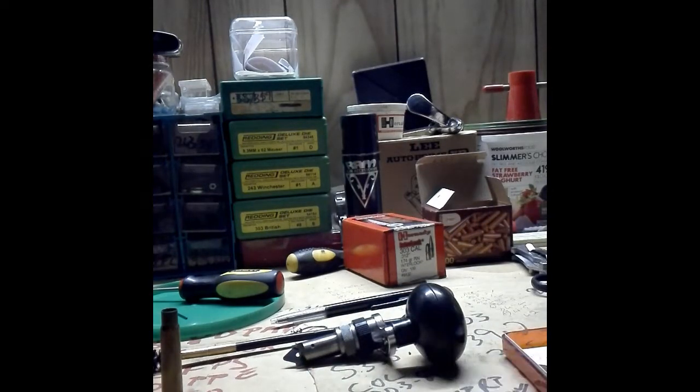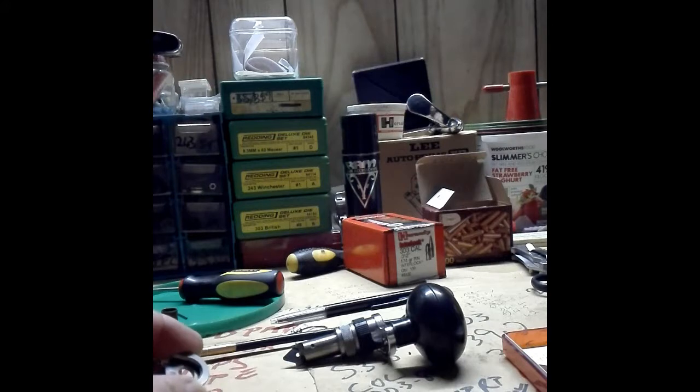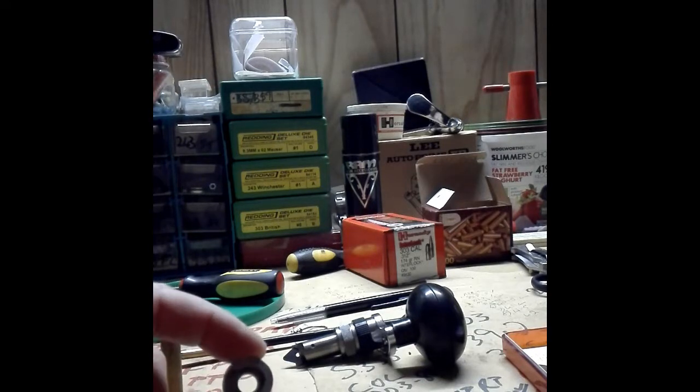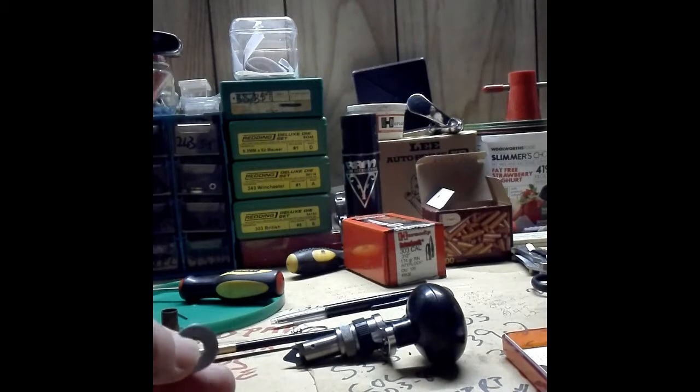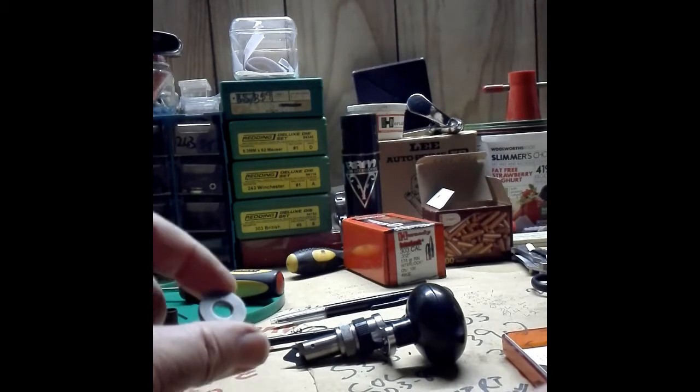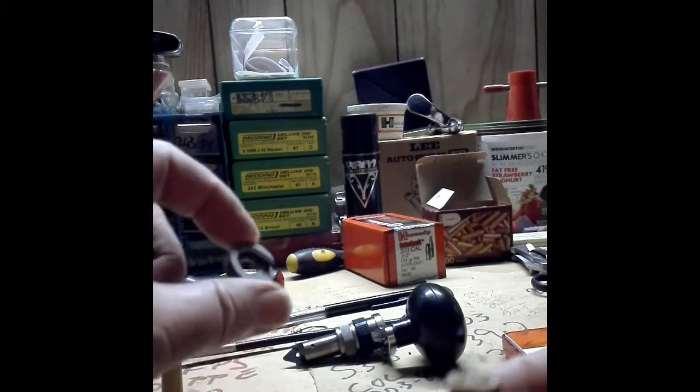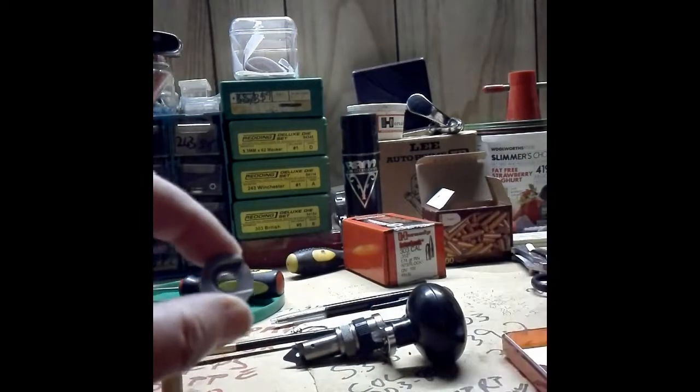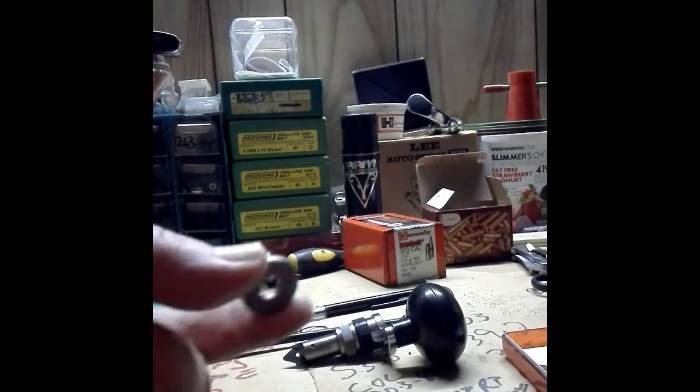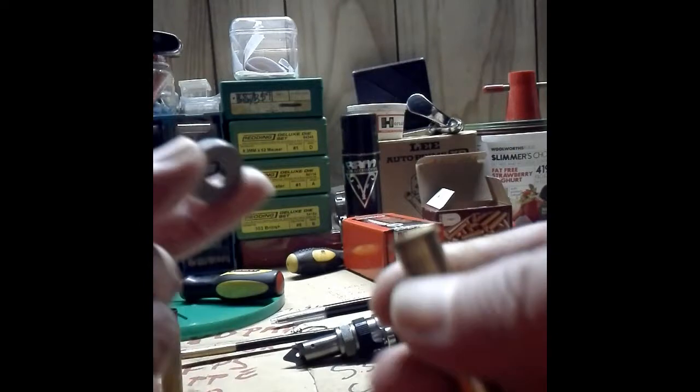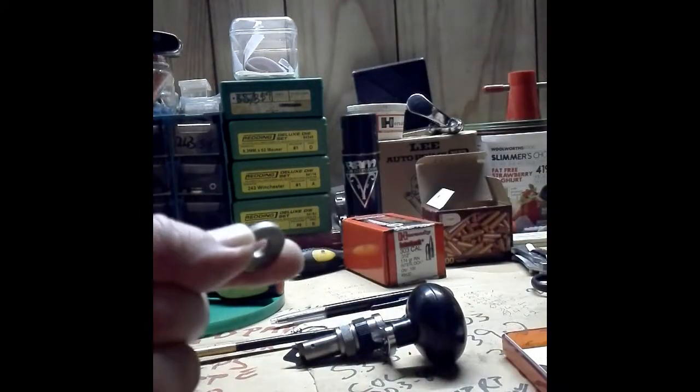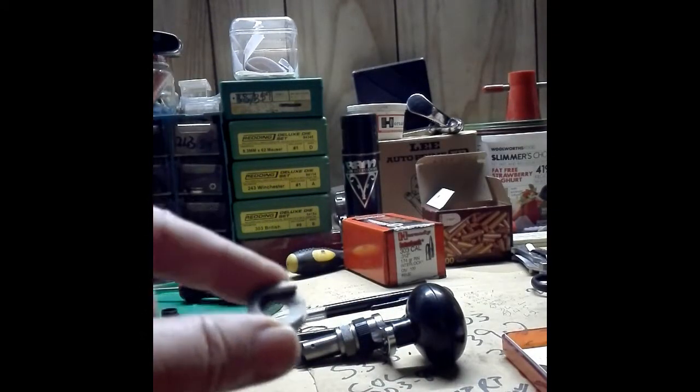What I do is I use a number five shell holder, a Lee hand priming tool shell holder. You'll see it looks a bit different from the normal shell holder that goes into the die press. It's flat at the bottom here with no extruded bit at the bottom, which makes it easy to use for the following purpose as well.